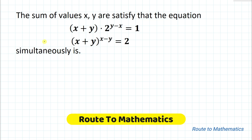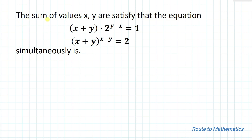Hello everyone, welcome to Root 2 Mathematics. In this video we are going to solve an interesting algebraic problem. The given question is: the sum of values x and y that satisfy the equations — x plus y multiplied with 2 to the power (y minus x) equals 1, and (x plus y) to the power (x minus y) equals 2 — simultaneously.